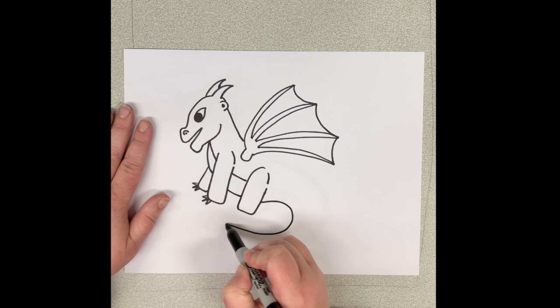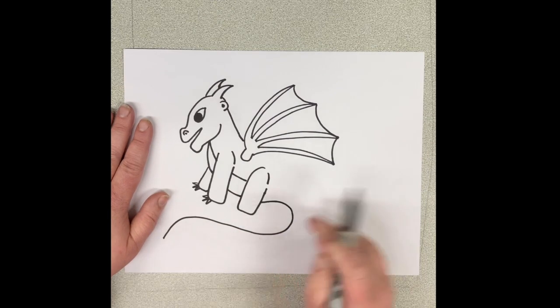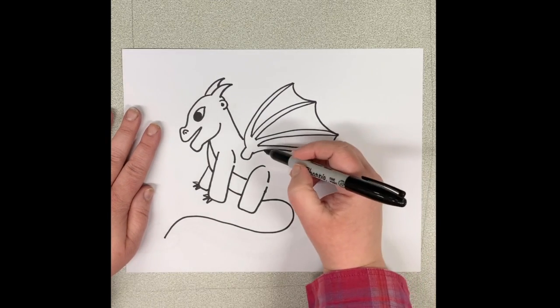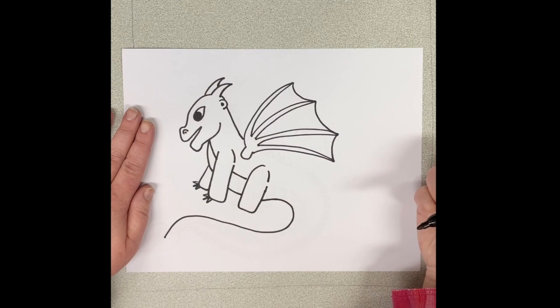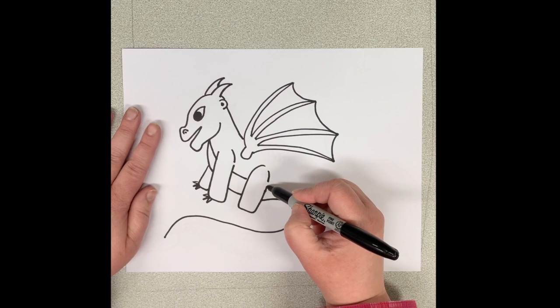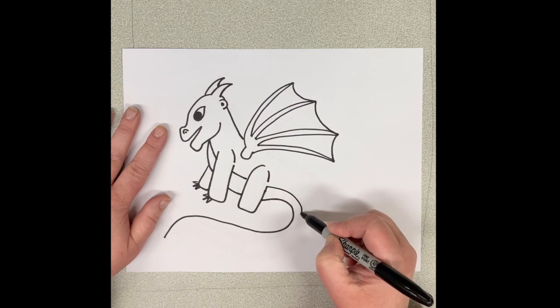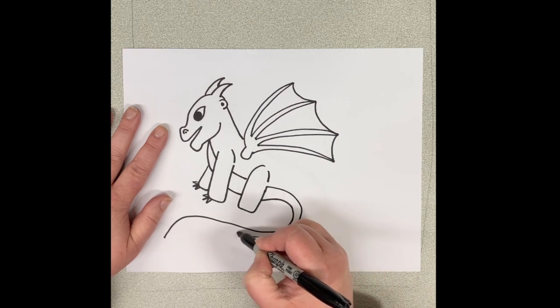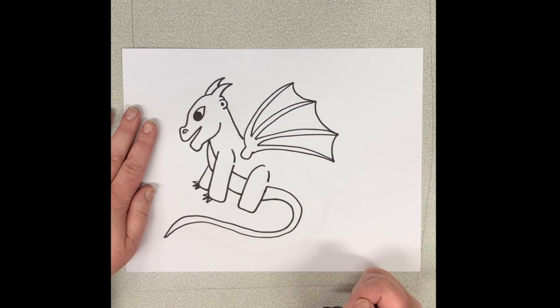And it's going to curl along into a very long tail. And then we want to add the other part of his stomach going down. And it follows the same line and it gets skinnier until it gets to the end.